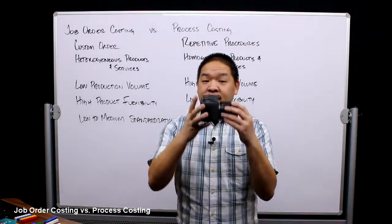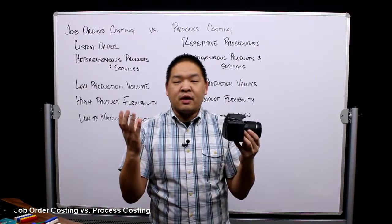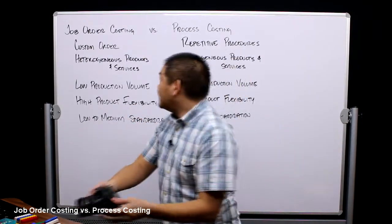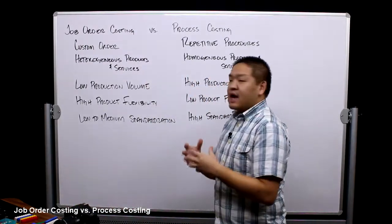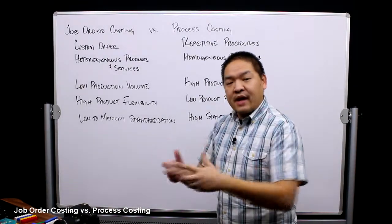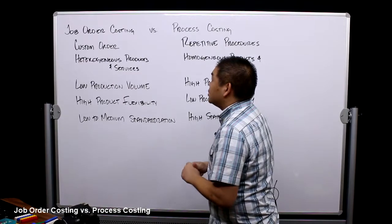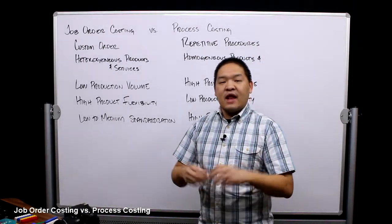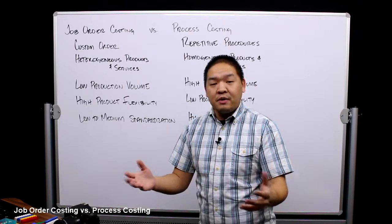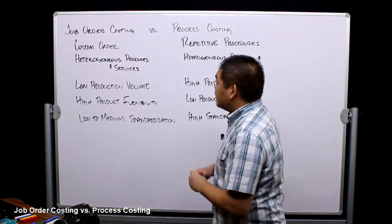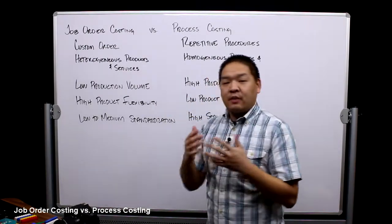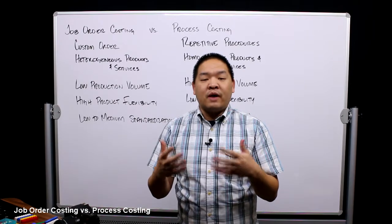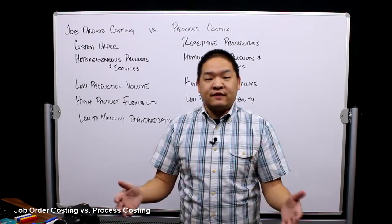Therefore the cost to repair this camera versus another camera is going to be different. I need to allocate costs differently based on the order. We typically use job order costing when we have custom orders — things that need some customization in repairs, services, or products. Job order costing is used when we have heterogeneous products and services — very different products that aren't necessarily similar. Typically we have low product volume; if I'm repairing cameras it's low volume, and I can only complete one repair in a couple of hours rather than hundreds at a time.